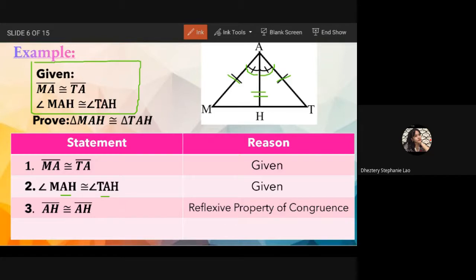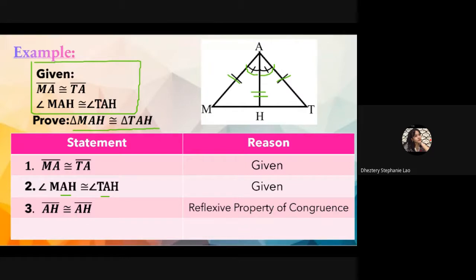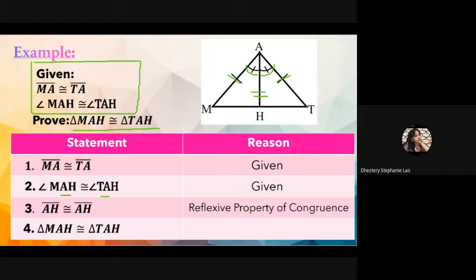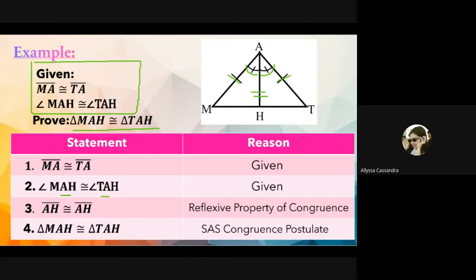The last statement is always what we need to prove. Statement four: triangle MAH is congruent to triangle TAH. Herrera answers: the reason is side angle side congruence postulate. Correct! The reason is SAS congruence postulate.